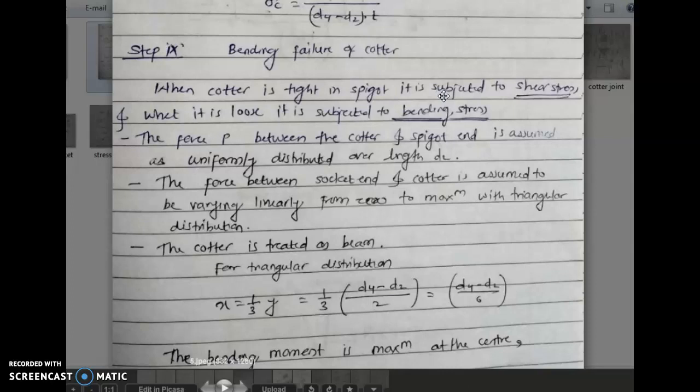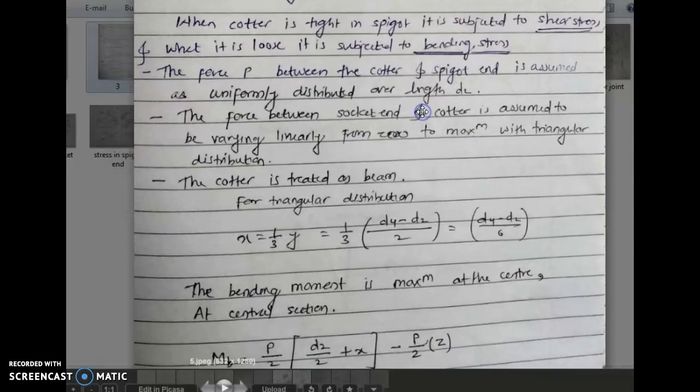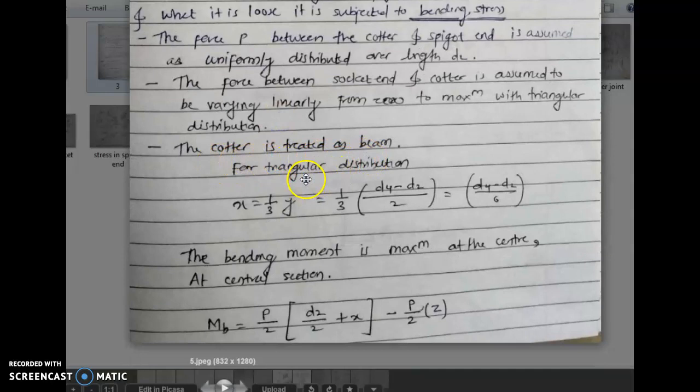For bending stress, we use concepts from the Strength of Materials subject. The force P between the cotter and spigot end is assumed as uniformly distributed over length d2. The force between the socket end and cotter is assumed to be varying linearly from zero to maximum — a triangular distribution. We will see the diagram to understand this clearly. The cotter is treated as a beam.